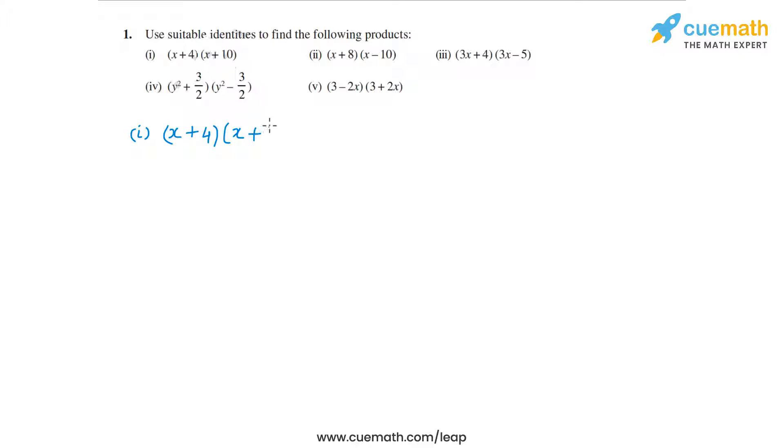This is of the form (x + a)(x + b), so we will use the identity x² + (a + b)x + ab. We'll have x² plus 4 + 10, which is 14, so plus 14x, plus 4 into 10, that's 40. So x² + 14x + 40 is the answer to the first one.